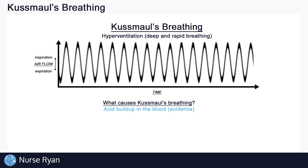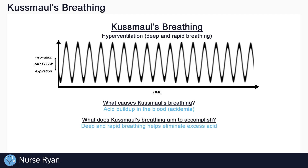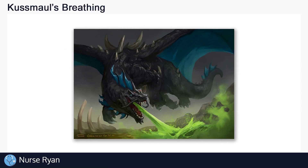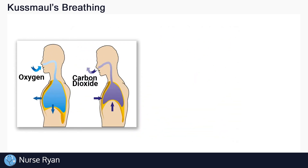And what does Kussmaul's breathing aim to accomplish? Why does the body do it? Well, by breathing deeper and faster, the lungs can actually help to get rid of the excess acid. And if you think it sounds weird that your body can breathe out acids, then you're not alone. So as you know, we of course breathe out carbon dioxide with every breath.